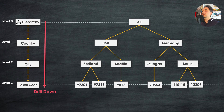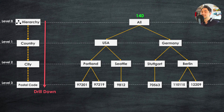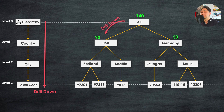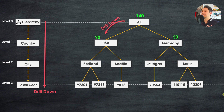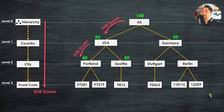Let's understand how drill down works using a sales example. We start at the root node — the highest level — where we have total sales across the whole dataset, for example 140. If we use drill down, we jump to the next lower level in the hierarchy, seeing more details about sales: for USA we have 90 and for Germany we have 50. Applying drill down again, we jump to the city level.